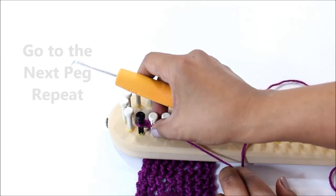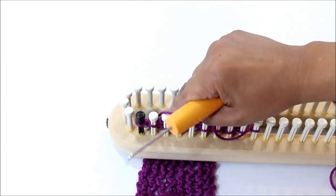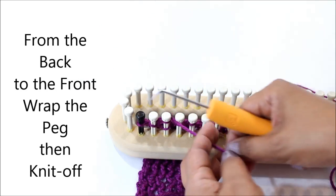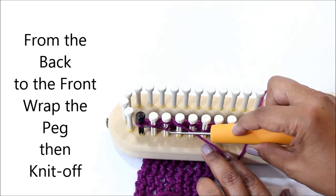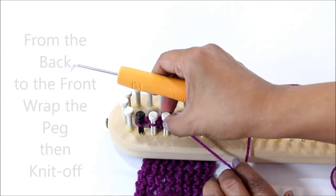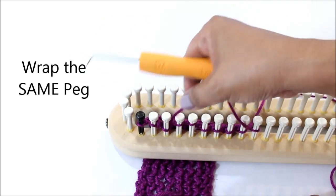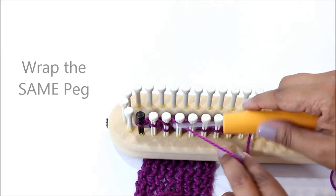Now you can go to your next peg and you're going to repeat the same process. You're going to wrap your peg and then knit off. Wrap the same peg again and knit off.